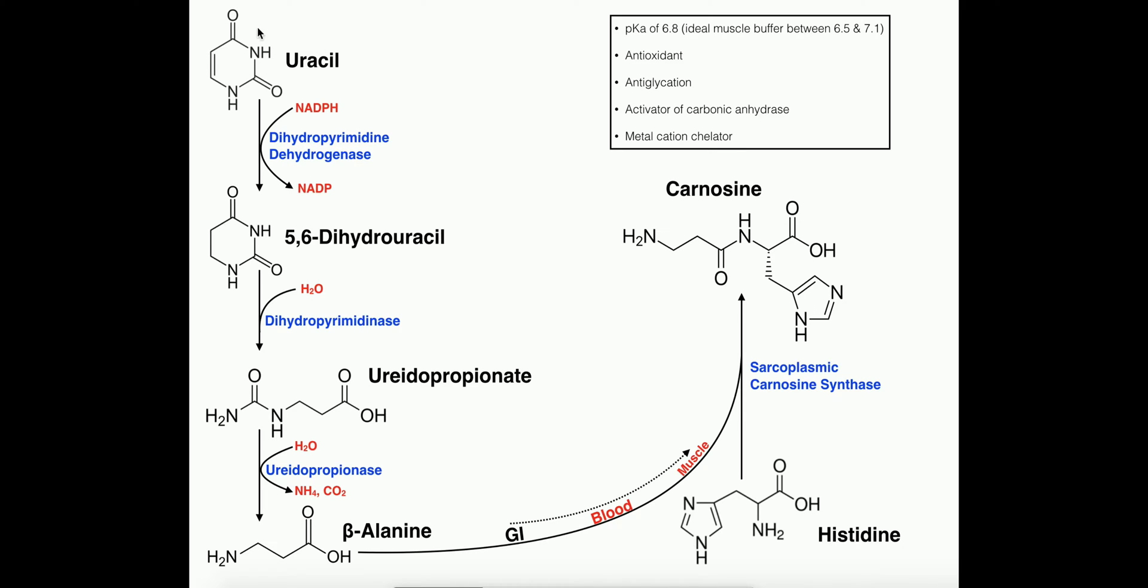Uracil is actually a pyrimidine that's found ultimately as a nitrogenous base in RNAs. Nucleotides are degraded just like any other macromolecule, and when the uracil part of the nucleotide is released from the ribose, uracil in excess will be degraded. This pathway of uracil degradation ultimately leads to the production of an amino acid called beta-alanine.